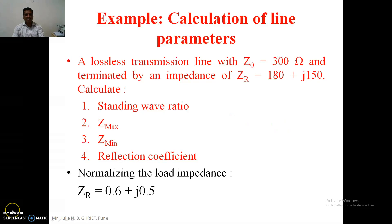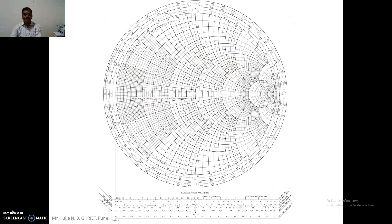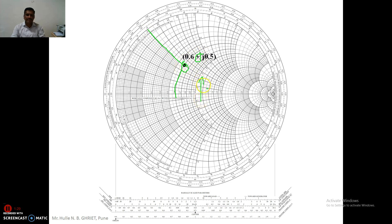First we will plot this impedance on the Smith chart and then deal with the calculation of the standing wave ratio, impedance at voltage maxima, voltage minima, and the reflection coefficient. We plot 0.6 plus j0.5, which is the intersection of the real circle 0.6 and the reactance circle 0.5. Since it is positive, it is on the upper side of the Smith chart.